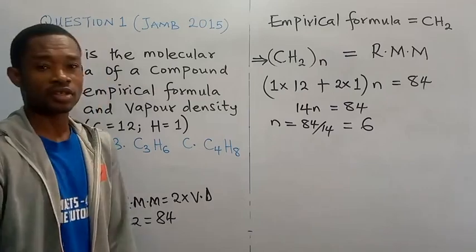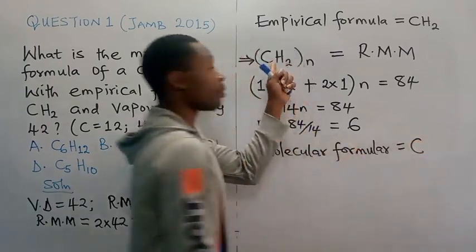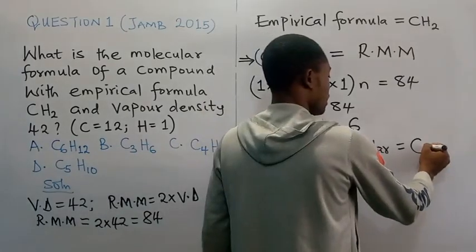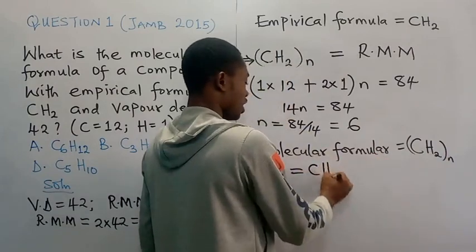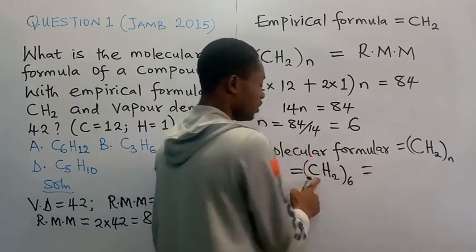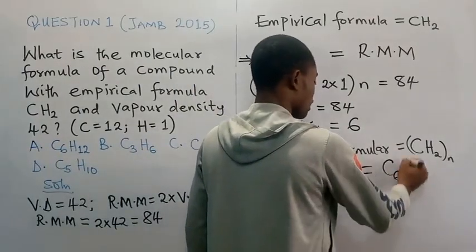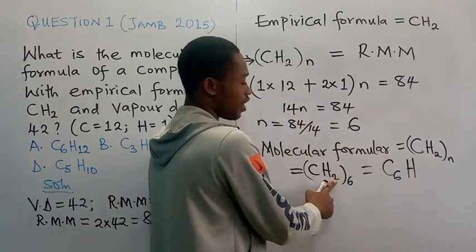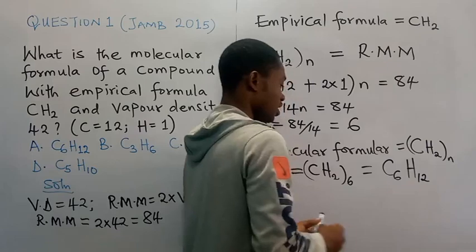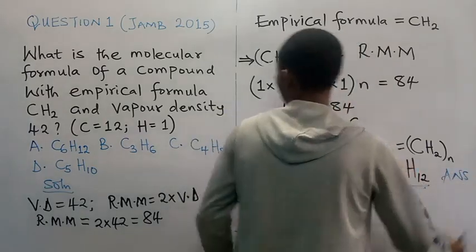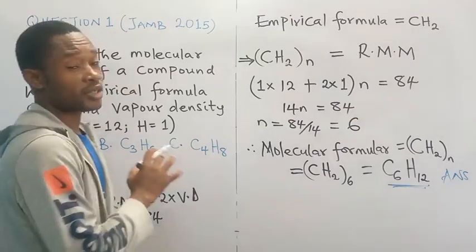Now that N = 6, the molecular formula equals CH2 multiplied by 6. Opening this up: carbon has 1 atom × 6 = C6, and hydrogen has 2 atoms × 6 = H12. So the molecular formula of the given compound is C6H12, and the correct option is option A.